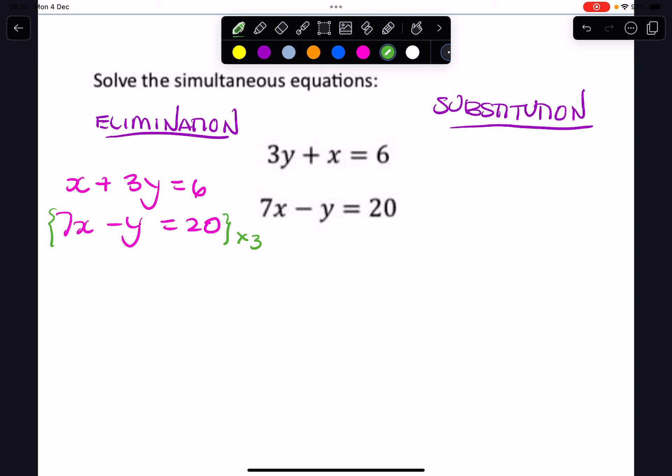So if I rewrite this equation, three times seven, three times y, and three times twenty, I'll get 21x minus 3y equals 60.